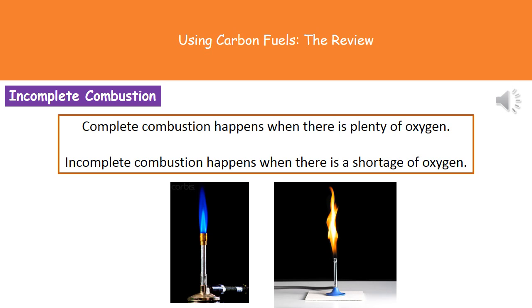Or we get incomplete combustion. This is what happens when there's not enough oxygen. That's what you can see on the right hand side in the picture of the Bunsen burner with that yellow flame.